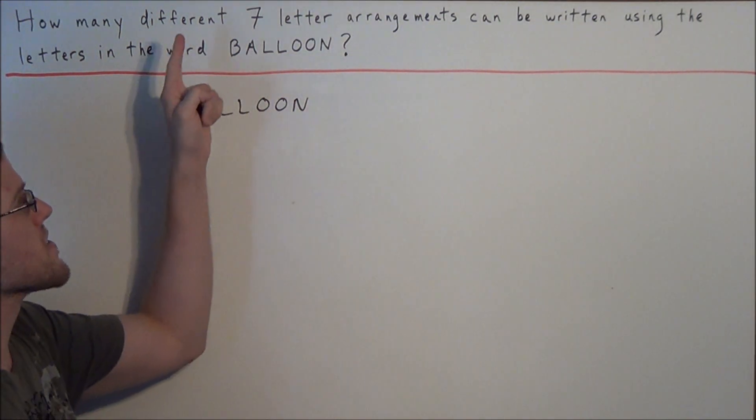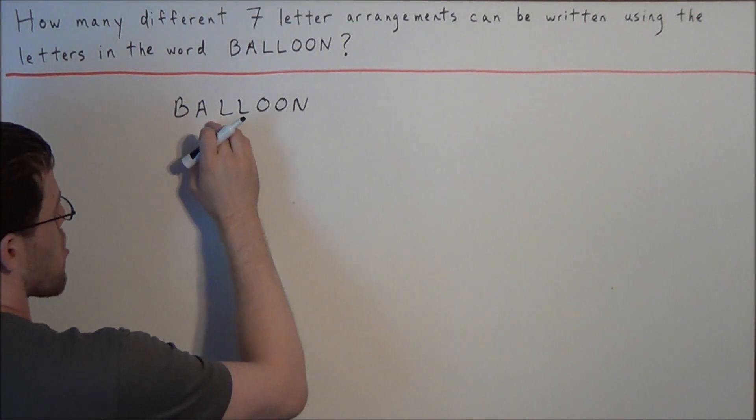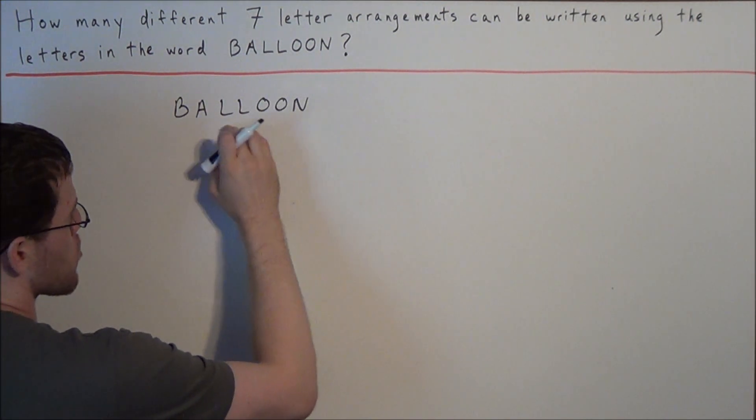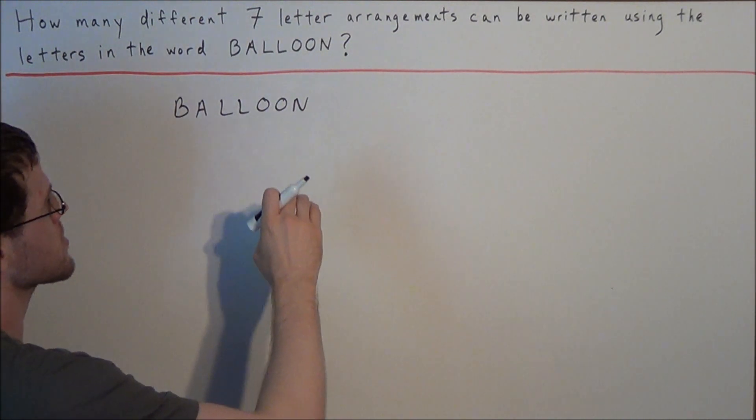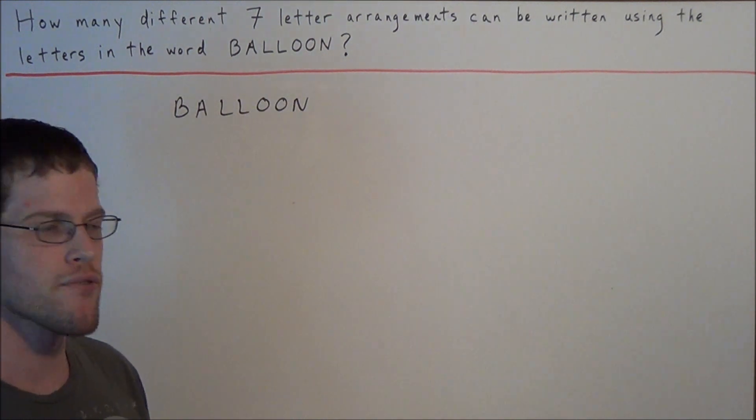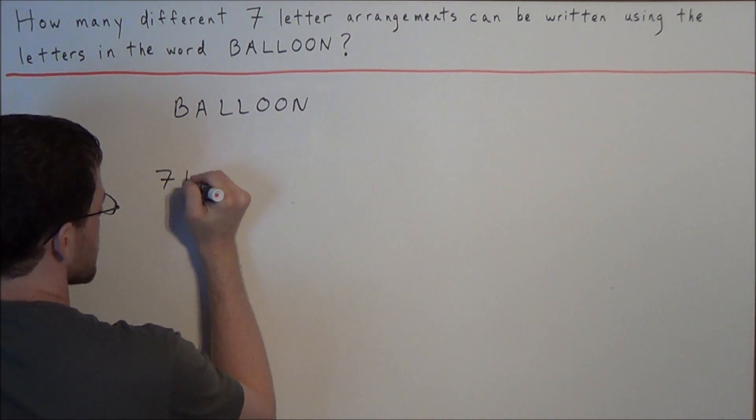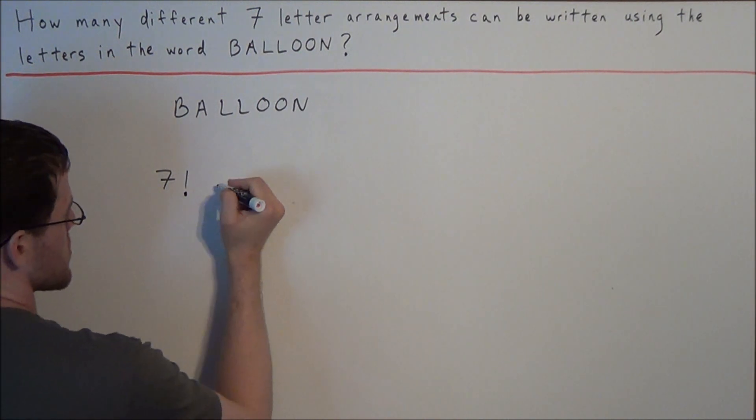Now we're trying to count the number of seven letter arrangements. Let's for a second pretend that there are no repeats within the word balloon because we do have two L's and two O's, but let's pretend we're counting seven letter arrangements where we have seven different letters. Now there would be seven factorial ways to arrange seven different letters.